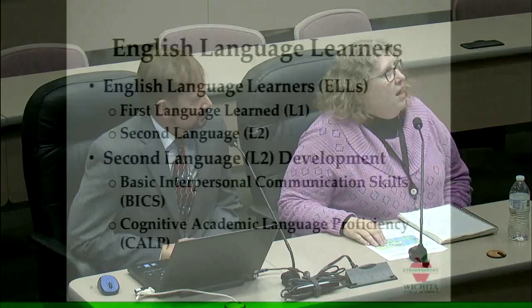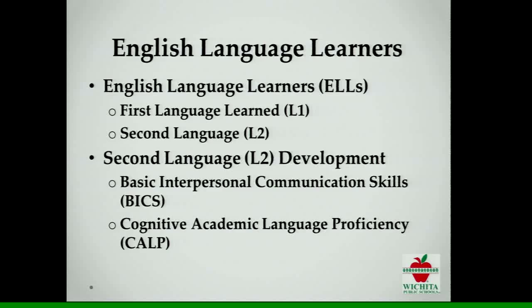We want to talk about who our ELLs are and how we identify them. An ELL is a student who has a language other than English in their home background — they can be called an ELL, EL, or L2 learner. The first thing they learn is BICs, Basic Interpersonal Communication Skills. Our job in the school system is to develop the CALP, cognitive academic language proficiency, which allows them to be successful in further education and in life.